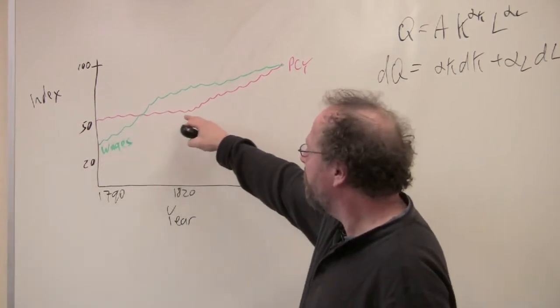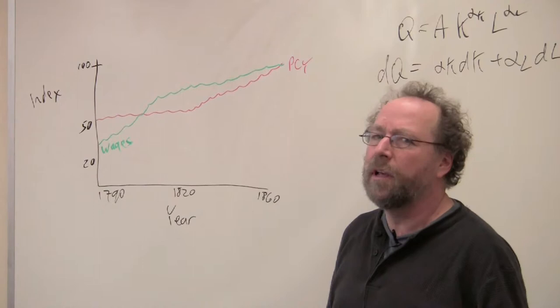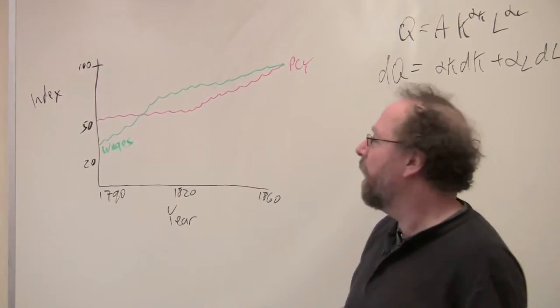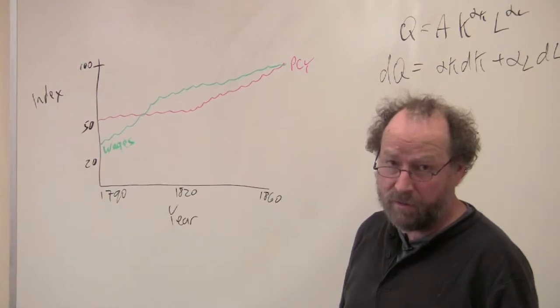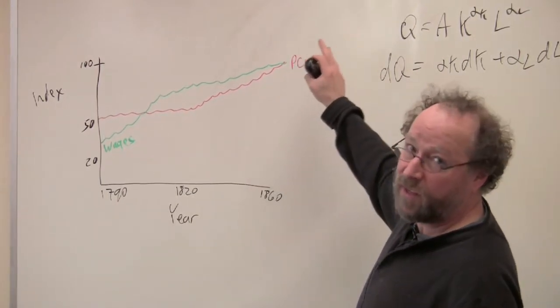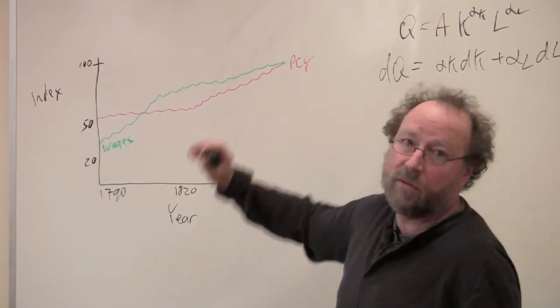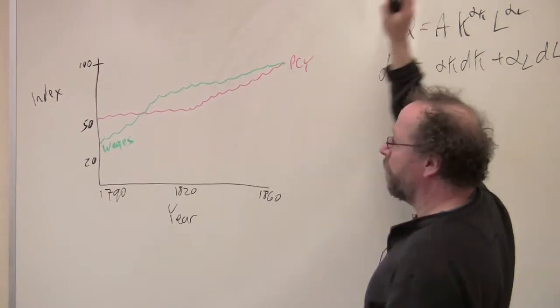And you notice that not much happens to this. Yes, it goes up a little bit in the 30 years after the Constitution, and then it starts going up more steadily until the Civil War. And actually this growth rate continues, accelerates a bit, down to today. So from here it's onward and upwards.